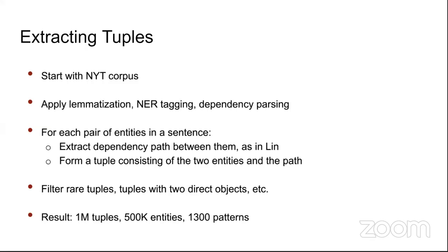After lemmatization and NER tagging, dependency parsing is used to find relationships between organization–person or person–organization pairs. Dependency parsing forms a tree among all named entities tagged. For each pair of entities in a sentence, extract the dependency path from the tree, form a tuple of those two entities and their path, filter out rare tuples, and the result on the NYT corpus was approximately one million tuples and 500,000 entities.